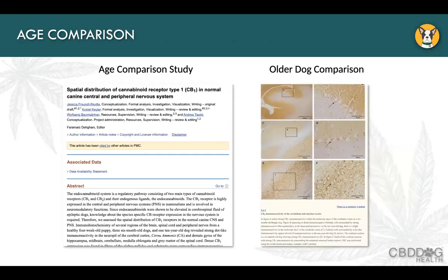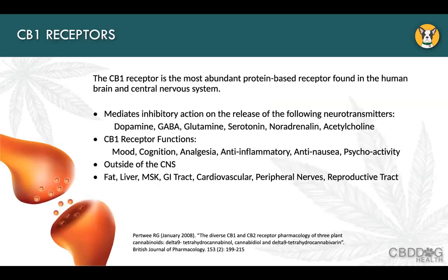As we age, the density of receptors increases, and this applies to our endogenous endocannabinoids as well as CBD and THC. It's as though the body needs those signals with more force to carry out its jobs. Whether it's harder to get the signal across as we get older isn't entirely clear. For this reason, especially with older pets, we have to be a little bit more cautious when increasing to a higher dose.